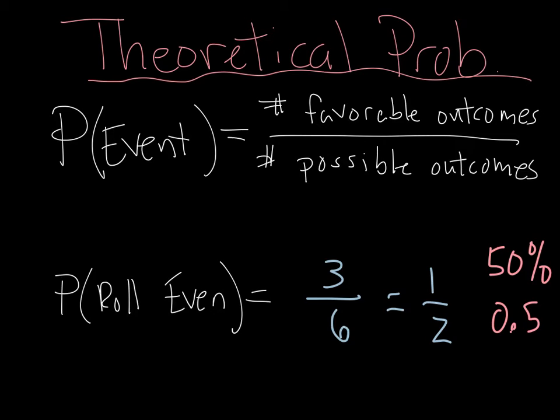Probability is given one of three ways usually. It's given as a fraction, or it's given as a percentage, or it's given as a decimal. Personally, I'm going to give it as a fraction most of the time. I think it requires the least amount of work.